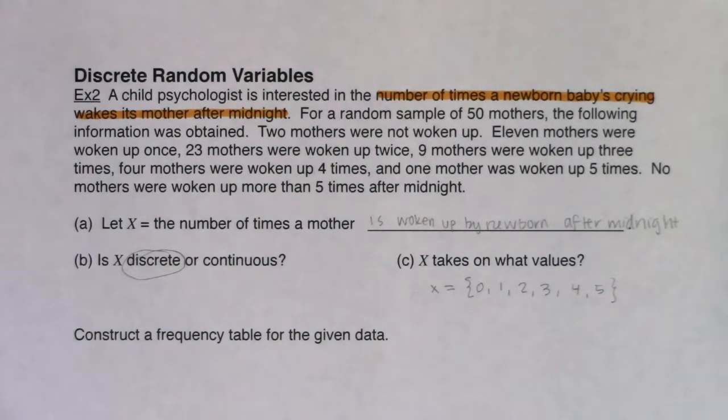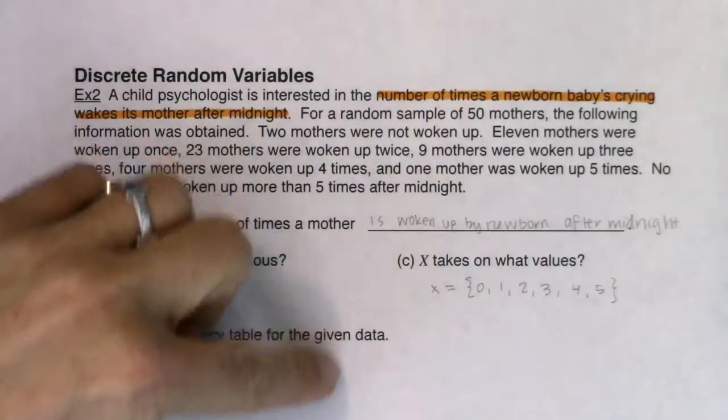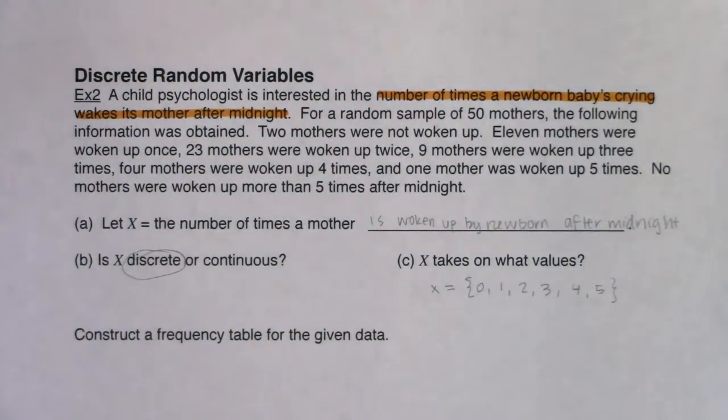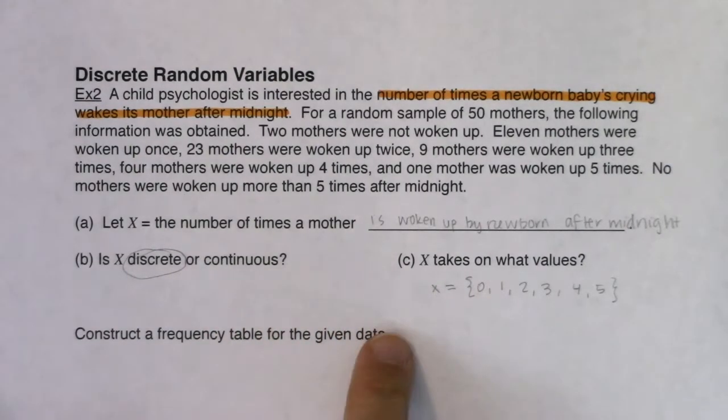I'm going to ask you to construct a frequency table. Back in chapter one, we made frequency distributions vertically, where our variable was on our leftmost column and the frequencies were on the right. We also went from frequency to relative frequency, cumulative frequency, and cumulative relative frequency. We're going to create a frequency table, but this time I'm going to do it horizontally.